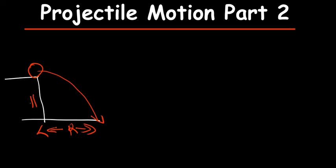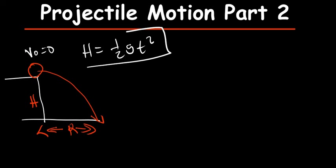This is the height. We said this ball is going to be thrown with an initial velocity of 0. To find the height, we derived the formula: h = ½gt². If you missed yesterday's class, I would advise you to watch the recorded class I posted on the channel yesterday.